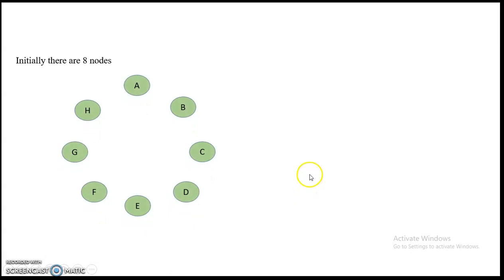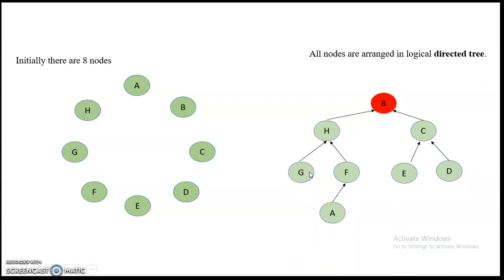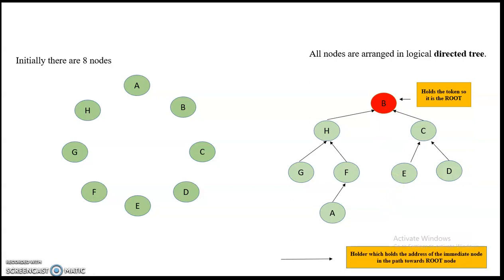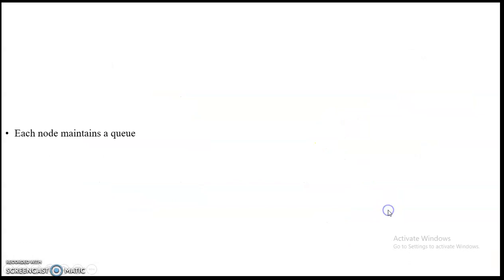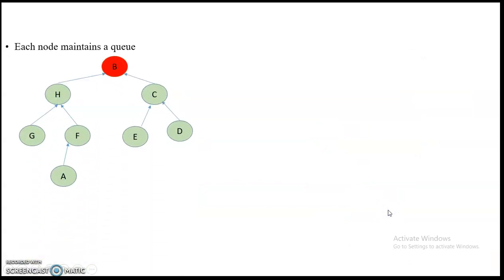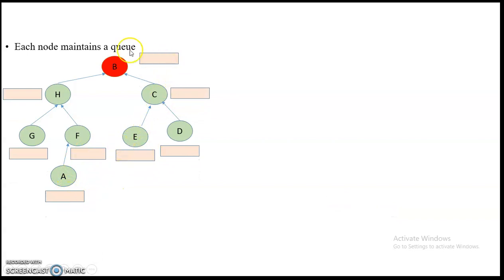For the illustration, there are eight nodes arranged in a logical directed tree. Node B is highlighted in red because it is holding the token and is thus the root. The arrows represent the 'holder' variable pointing to the immediate node on the path towards the root. Each node also maintains a queue, and initially all queues are empty.